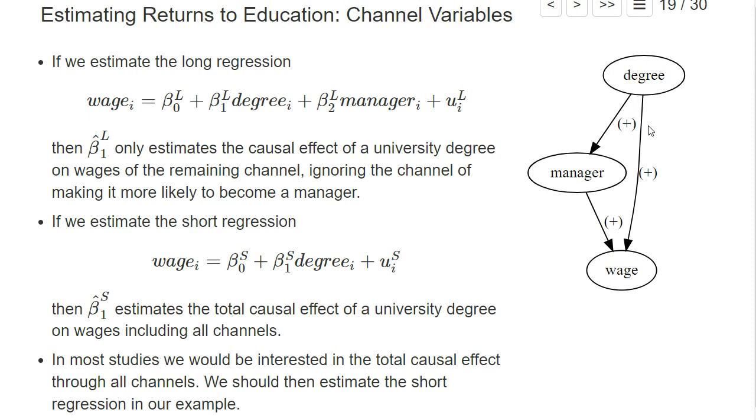So what it means is there are also different causal effects. So even if you say beta 1 shall be a causal effect, it's not yet so clear which causal effect it actually means.